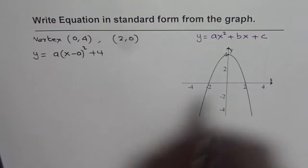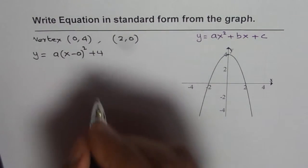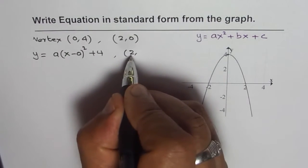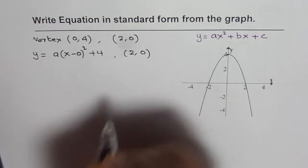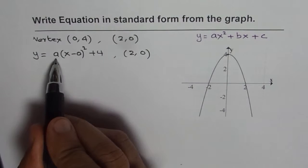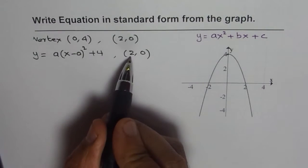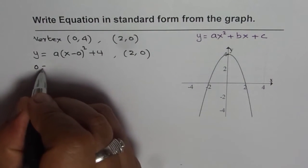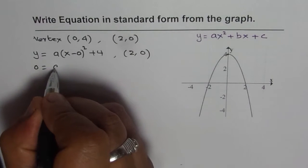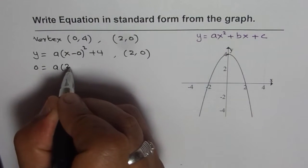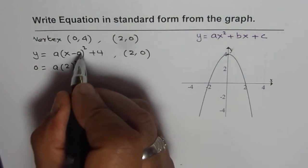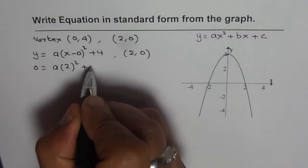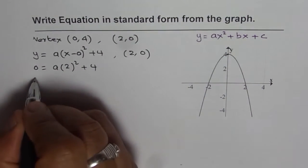To find the value of A, we utilize the point (2, 0). We substitute X equals 2 and Y equals 0 into the vertex form equation. So we get 0 equals A times 2 squared plus 4, which gives us 0 equals 4A plus 4.